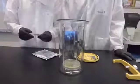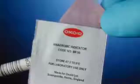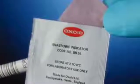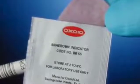We'll then take our resazurin indicator strip and place it on the inside wall of the jar. You want to make sure that this remains visible as it will serve as the indicator for when the jar is void of all oxygen.